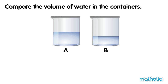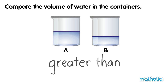Compare the volume of water in the containers. Both containers are the same size. The level of water in each container is different. The level of water in container A is higher than the level of water in container B. The volume of water in container A is greater than the volume of water in container B.